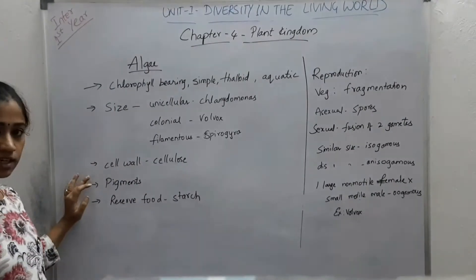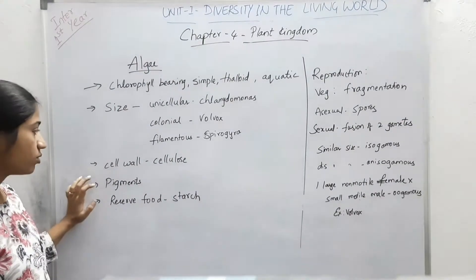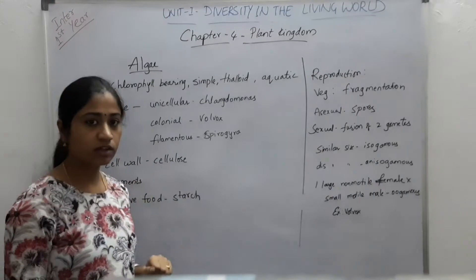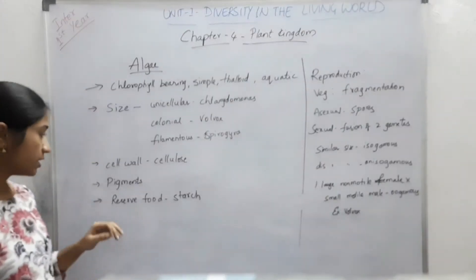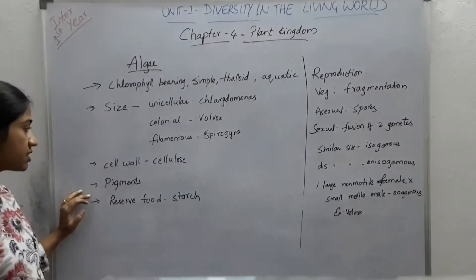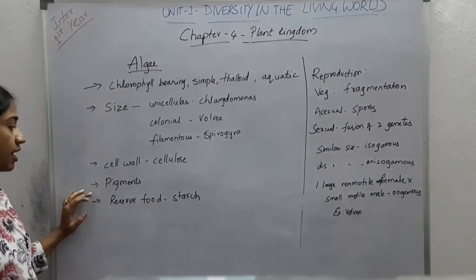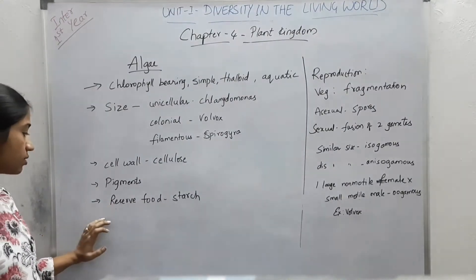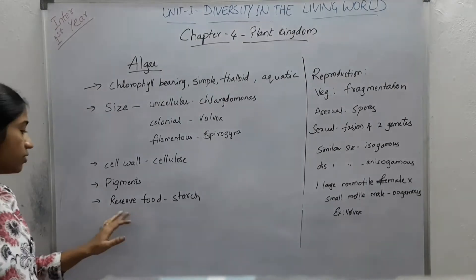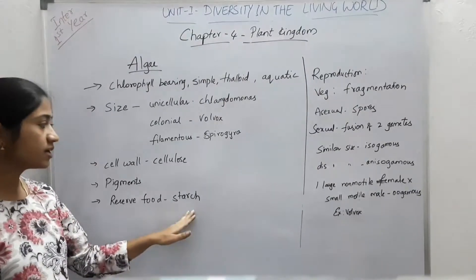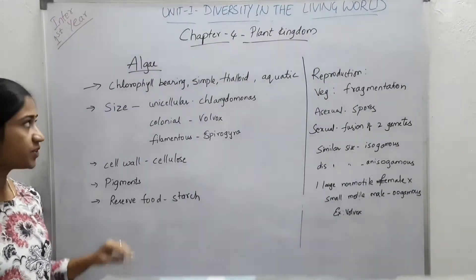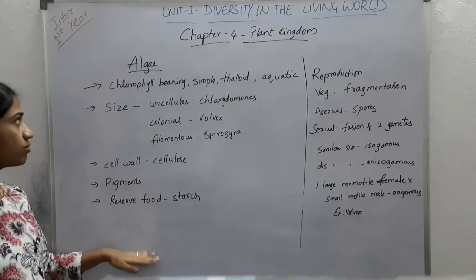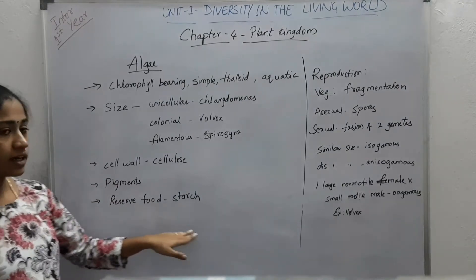Coming to the cell wall, it is made up of cellulose. In addition to cellulose, some algae also contain pigments. The reserved food material is in the form of starch. These are the main characteristics of algae.